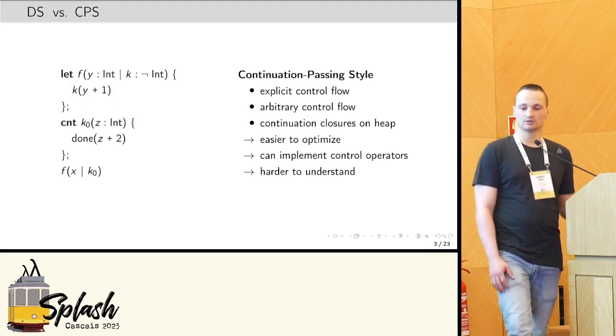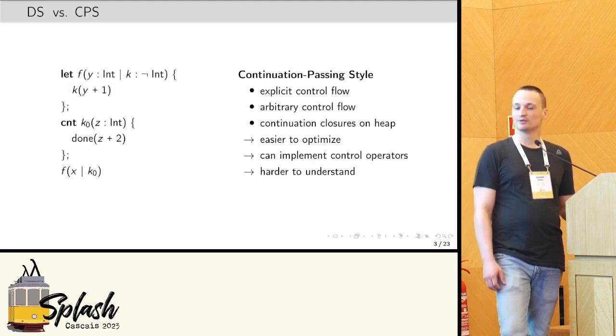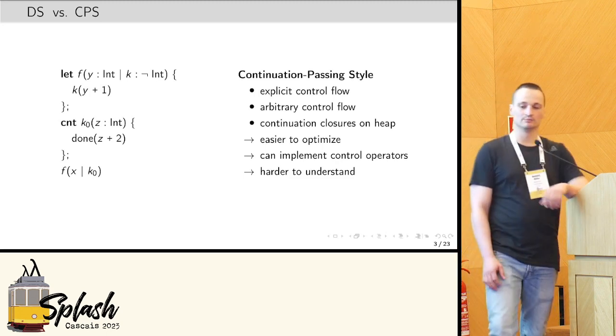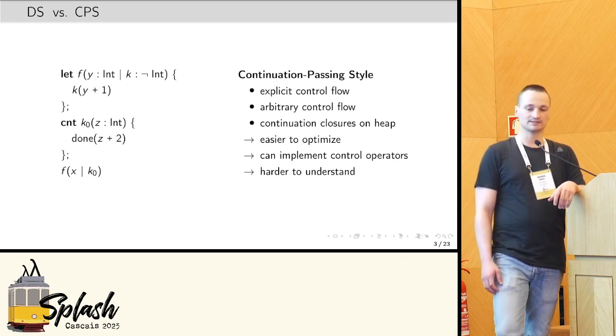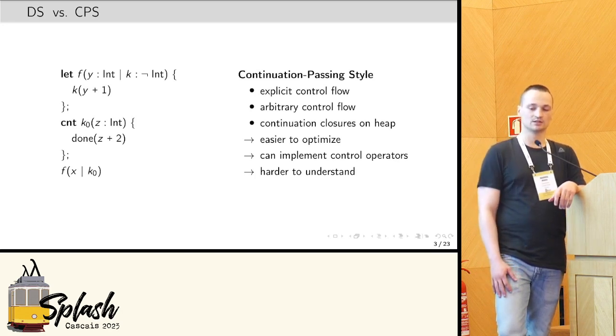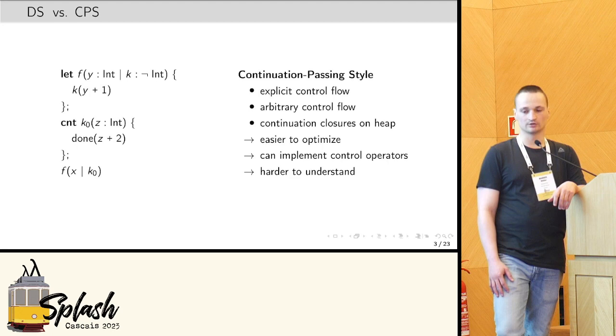So in contrast, here's the corresponding program in continuation passing style. As you can see, control flow now is completely explicit. The function receives as an additional parameter the current continuation, and instead of returning, the continuation is called.